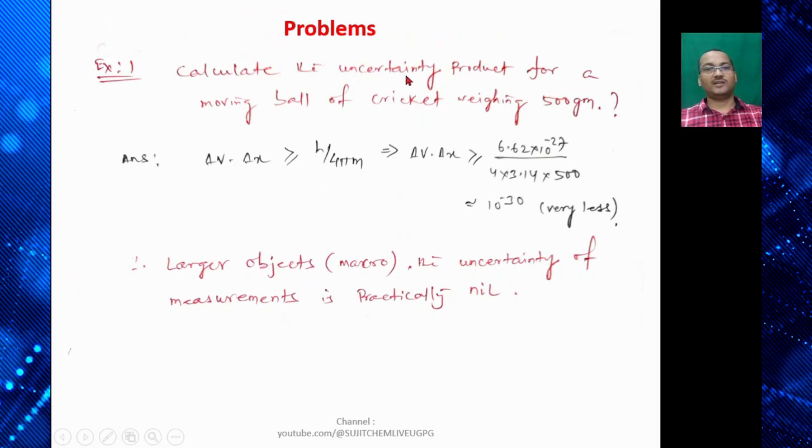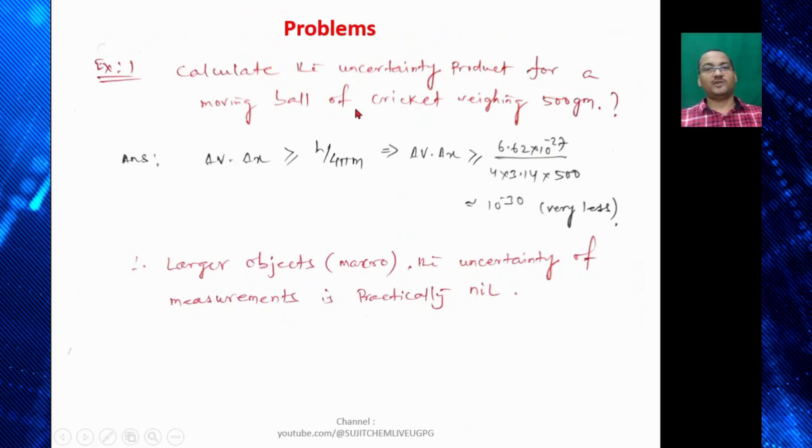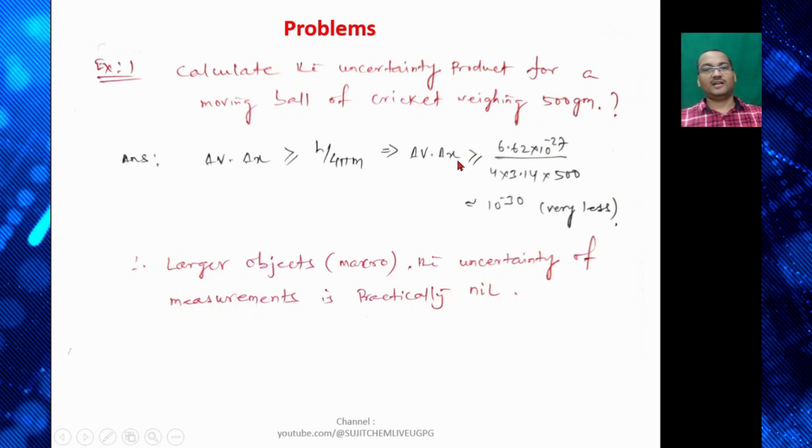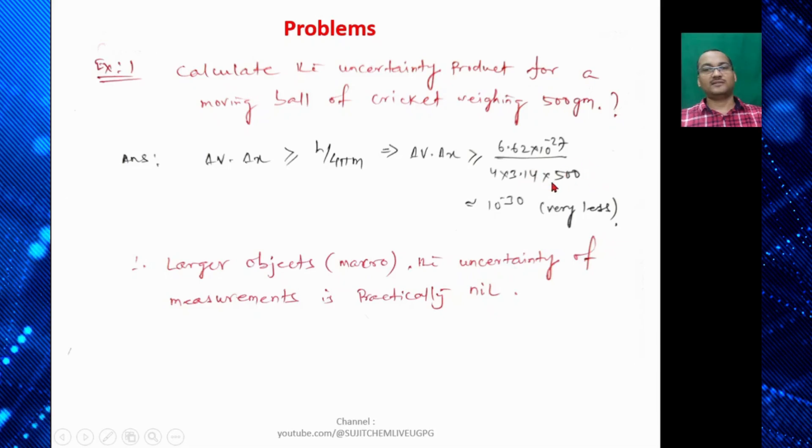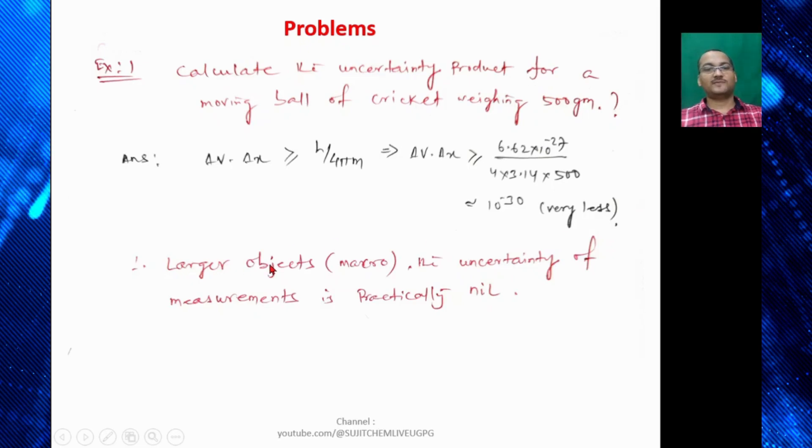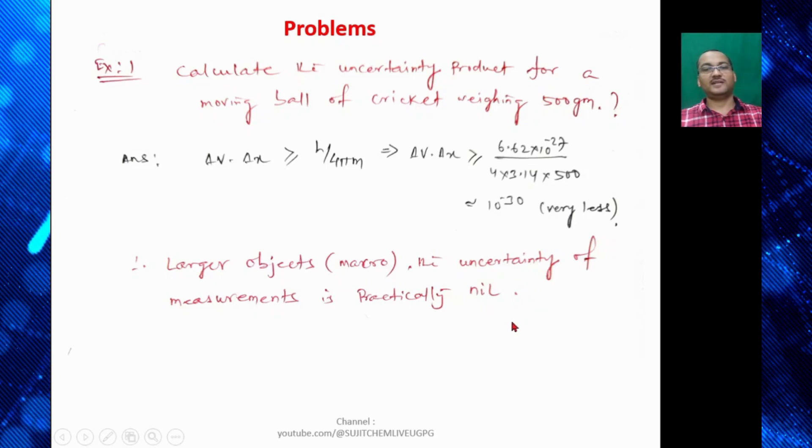So let's try some problems. Calculate the uncertainty product for a moving ball of cricket weighing 500 gram. So ΔP × ΔX ≥ h/4πm. So ΔP × ΔX, this is the uncertainty product, greater than equal to h value we know 6.62×10⁻²⁷, divided by 4 × π value is 3.14, and mass is 500 gram. So that is of the order found to be 10⁻³⁰. So which is very less. So for larger objects like 500 gram macro particles, macromolecules, uncertainty of measurements is practically nil or which is very very less.